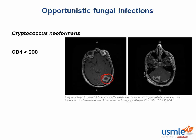If you suspect cryptococcal infection, treat with Amphotericin B and flucytosine. You can also prevent meningitis in these patients with antifungal prophylaxis using fluconazole.